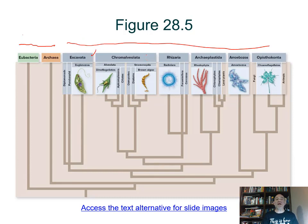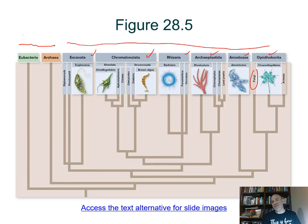The six supergroups are: Excavata, Chromalveolata, Rhizaria, Archaeplastida — meaning 'ancient chloroplast' — Amoebozoa, and Opisthokonta, which includes fungi, Animalia, and some protists still alive today called choanoflagellates.